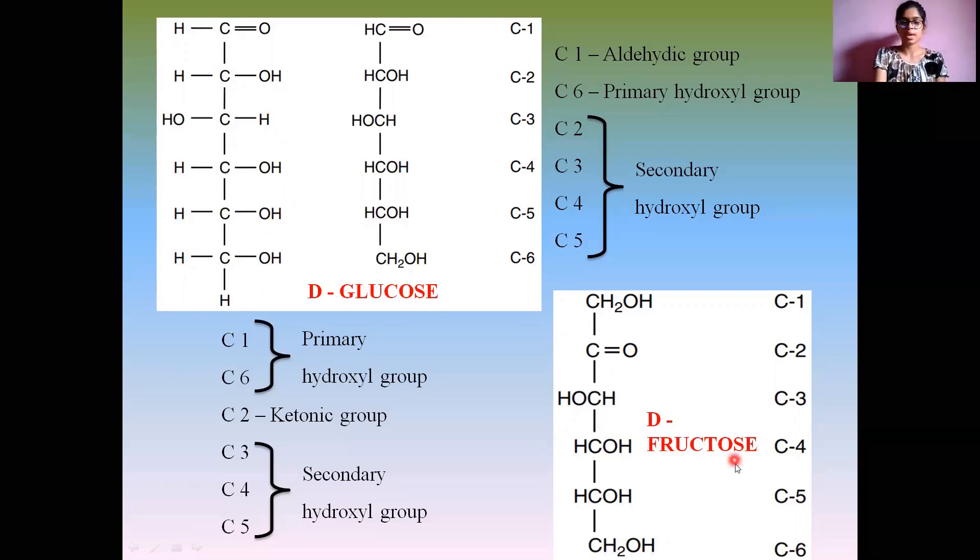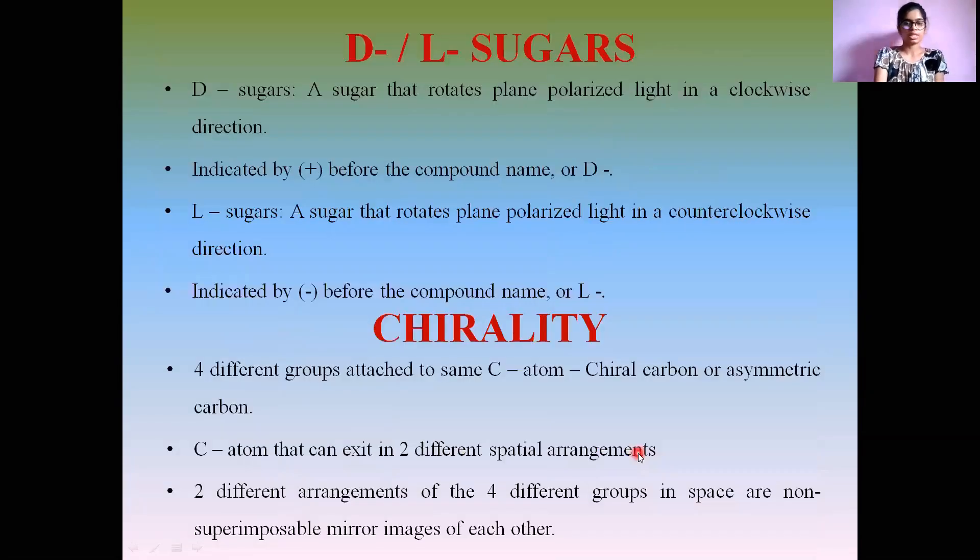It is the same for keto sugars also, where the C3, C4, and C5 secondary hydroxyl groups are called chiral atoms because they have four different groups attached to the four bonds of the carbon atom.